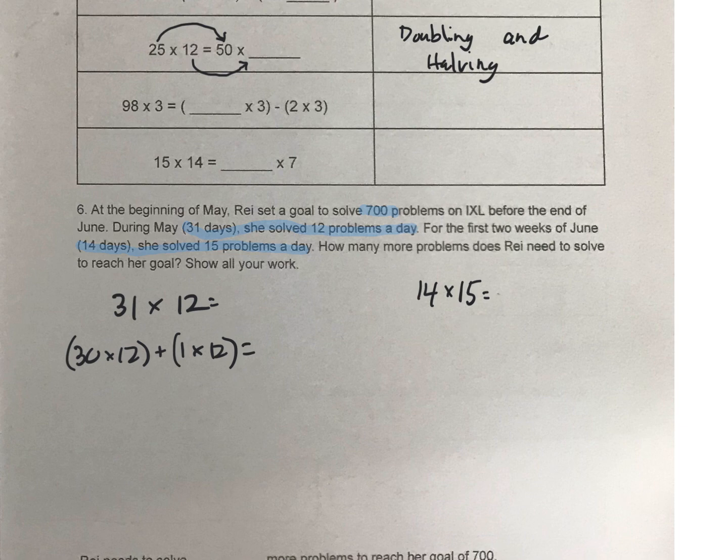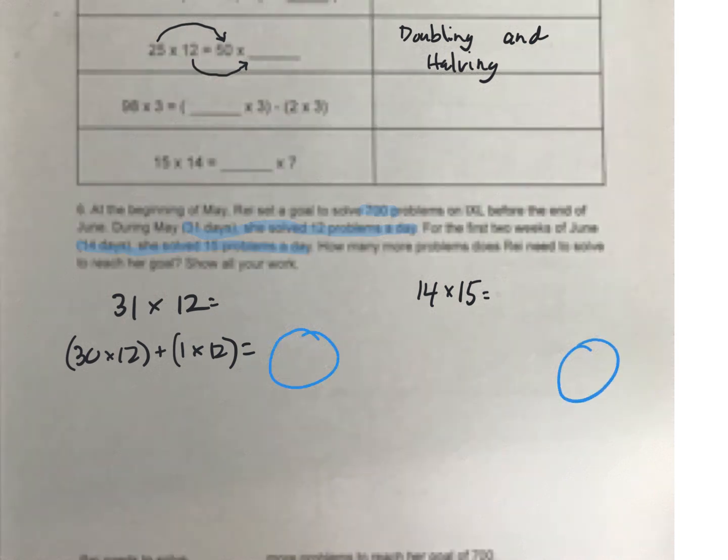And then you're going to have a number here and a number here. Put those together. And then is she to 700 yet? So when you add these two numbers together, it's going to be that plus what equals 700. Or you could do it the other way. You could do 700 minus whatever she solved equals the answer here. So how many more problems does she need?